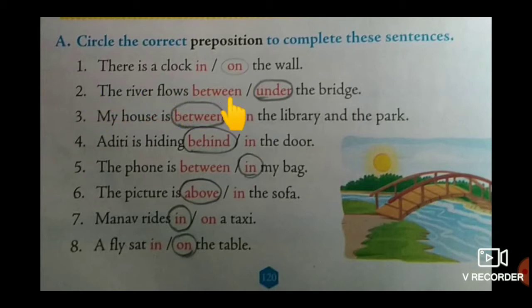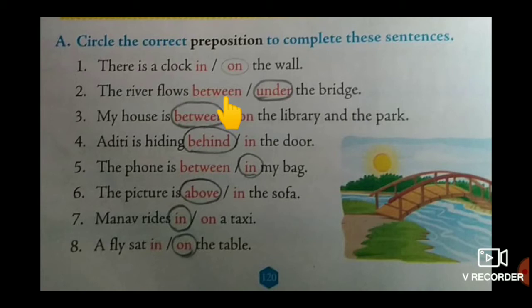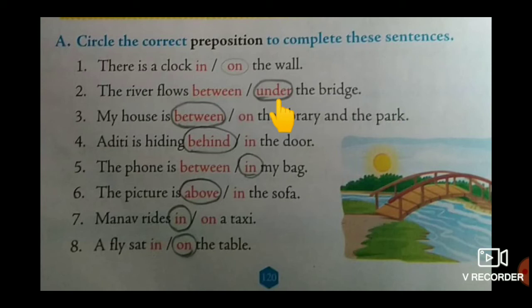Second one: the river flows between or under the bridge. 'Between' is not possible here — between means middle, and middle of the bridge is not possible for a river. So the suitable preposition is 'under.' The river flows under the bridge.